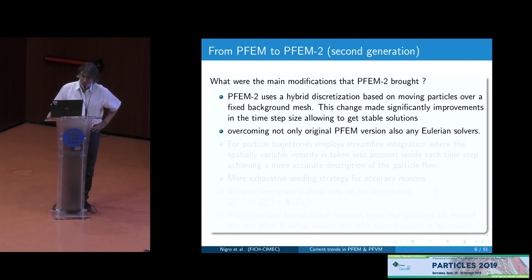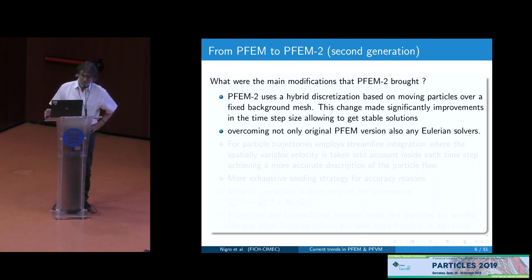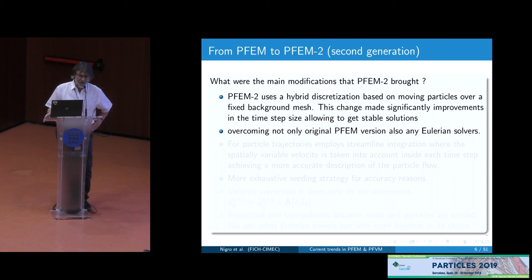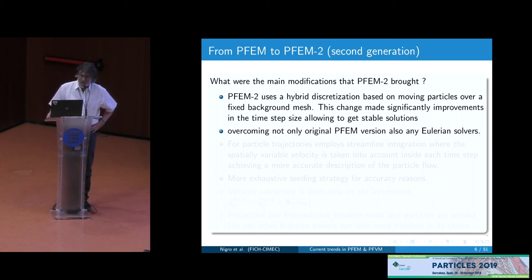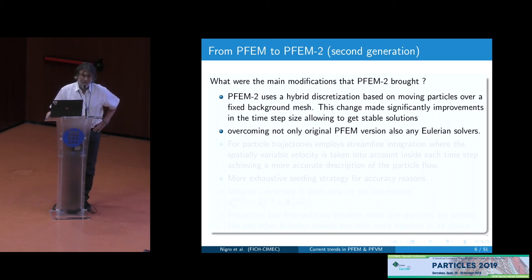So we worked with Sergio Idelson to get a new version of PFEM, trying to move to another version that improved a lot — especially efficiency and stability — because the severe restriction in the time step produced very long simulations. With the selection of a hybrid discretization using mesh and particles, it is possible to control the time step in a better way, and using particles and mesh it is possible to get a more stable solution than the purely Eulerian one.